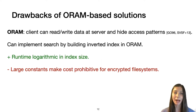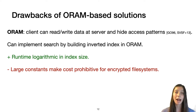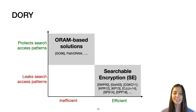There are many more attacks leveraging different types of leakage, but at their core they allow the attacker to learn information about the document plaintext or the keyword being searched for. Given the dangers of search access patterns, we might consider ORAM-based solutions. ORAM is a generic primitive that allows a client to read and write data at the server while hiding access patterns, and we can implement search by building an inverted index in ORAM. However, large constants in even the most practical ORAM schemes make the cost prohibitive for end-to-end encrypted file systems.